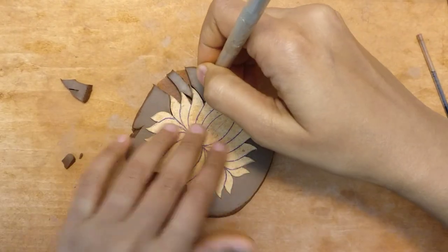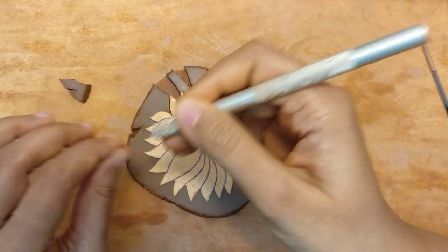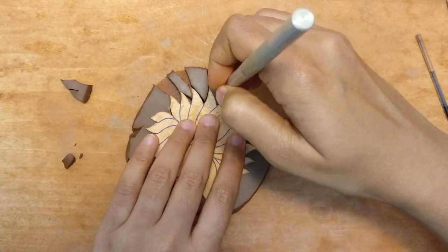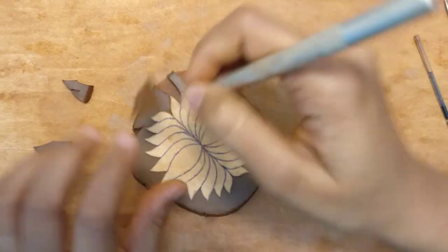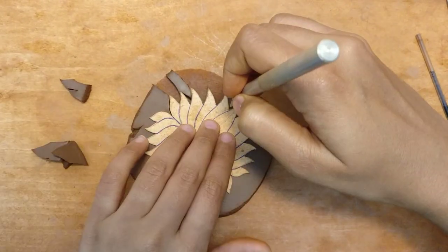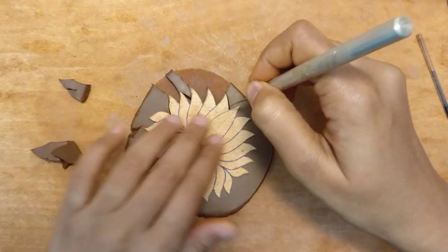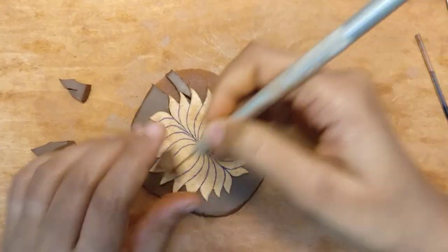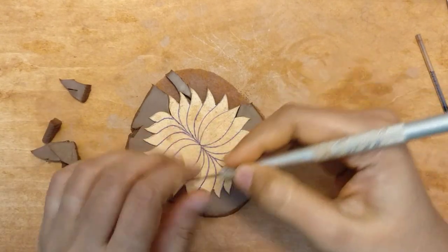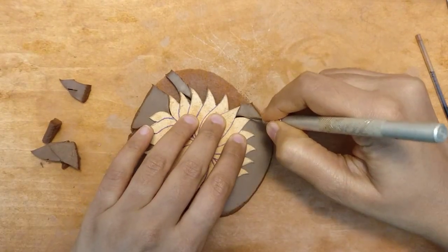If you see, I'm constantly cleaning the tip of my blade just so that I get very clean, crisp cuts. At this stage, if this is very flimsy, there's a good chance you may not get a very good outline.